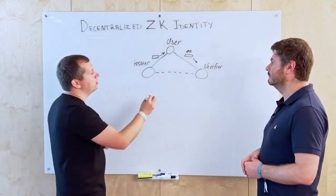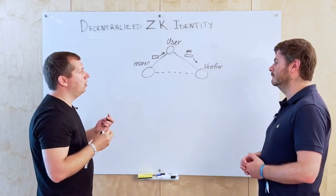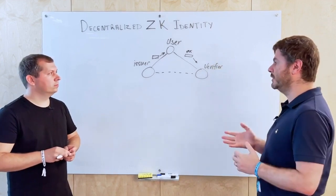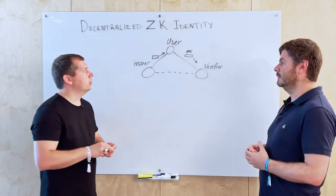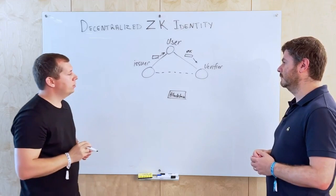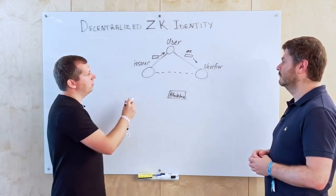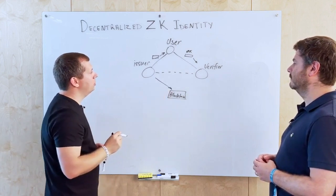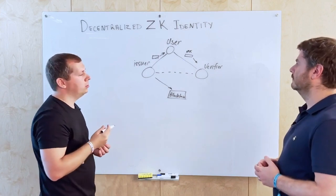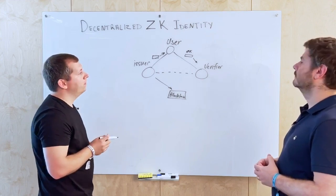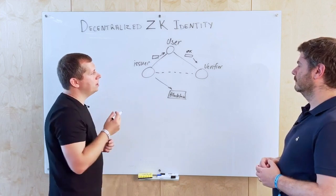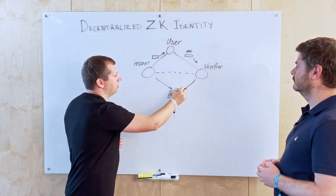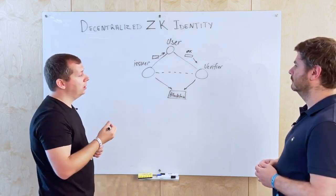For zero-knowledge proofs to work we need some public data and some private data. Blockchain is used here to store anchors of these claims on-chain. For the trust link to work, identities of issuers need to be published on-chain. These identity states of issuers include claims and also revocations. When a verifier receives a zero-knowledge proof of some statement, they also need to check the blockchain to verify that the data referred to is correct and is on-chain.